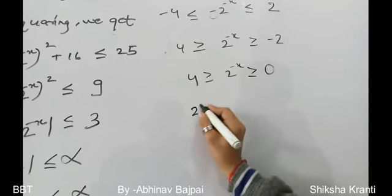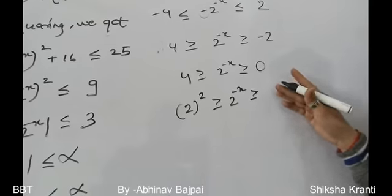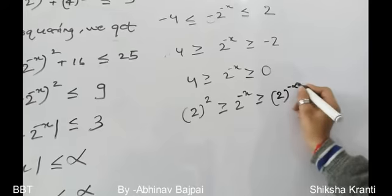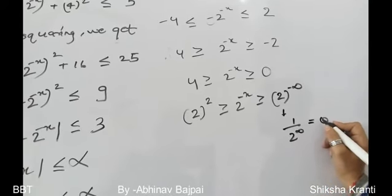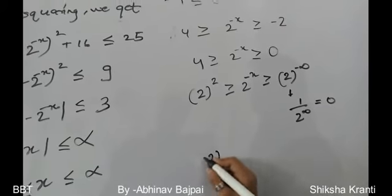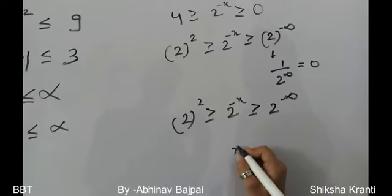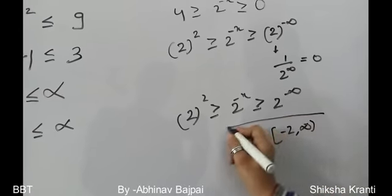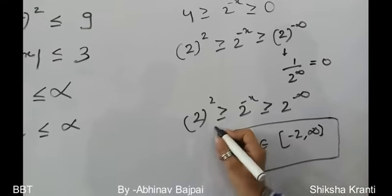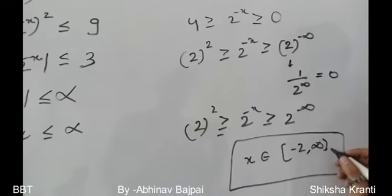Writing 4 = 2², we have 2^(-x) ≤ 2², and the lower bound approaches 2^(-∞) = 0. So -x ranges from -∞ to 2, meaning x ∈ [-2, +∞). We use a closed bracket at -2 (equality holds) but an open bracket for infinity since infinity is not a number. The correct answer is D.